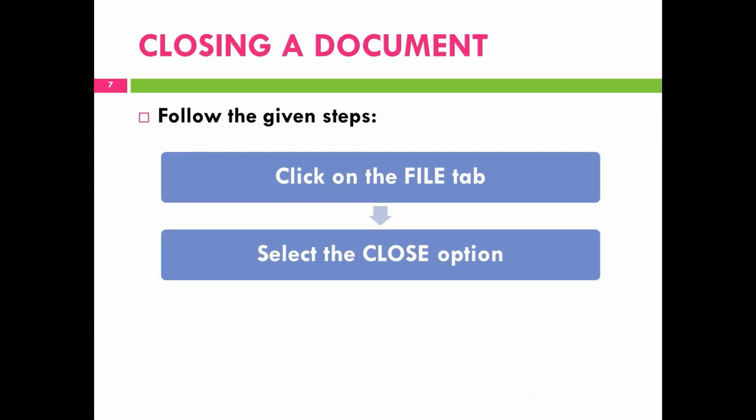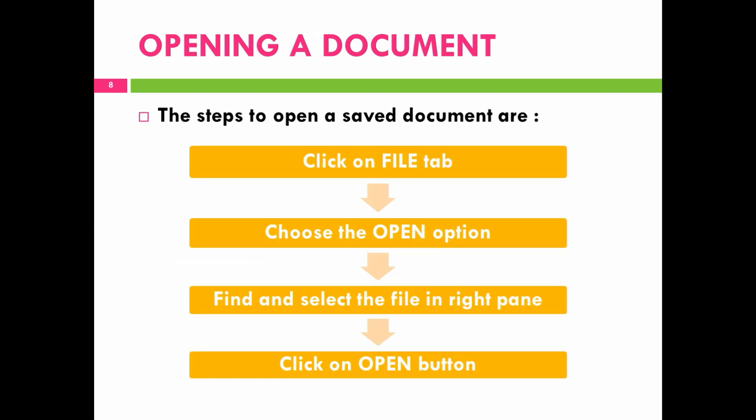Next is closing a document. Follow the given steps: click on the file tab and then select the close option. Next is opening a document. You can open a document if it is already existing. The steps to open a saved document are: click on the file tab, then choose open option, find and select the file in the right pane, and then click on the open button.